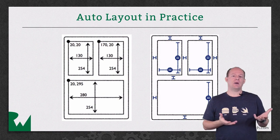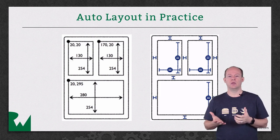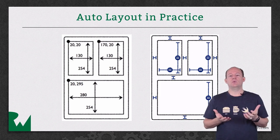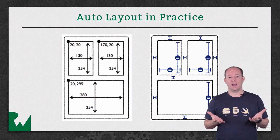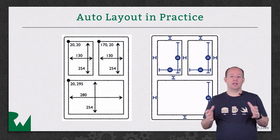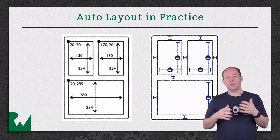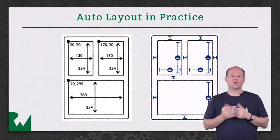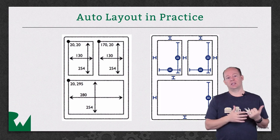If you think about how you would describe your user interface to someone without showing it to them, you probably wouldn't say there's a view at x equals 170 and y equals 20. You would probably say something more like, there's a view taking up the bottom half, and two equal views side by side taking up the top half, with padding between all of them. In Auto Layout, you can define that description using constraints.